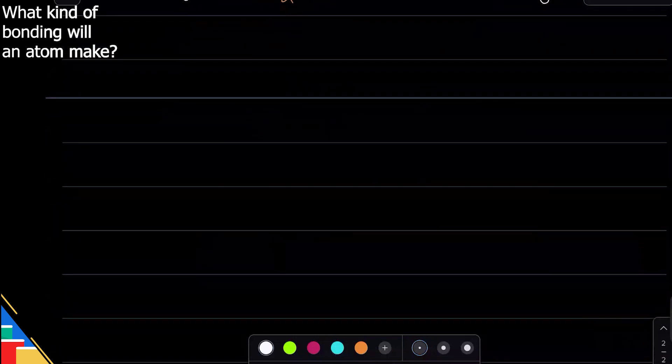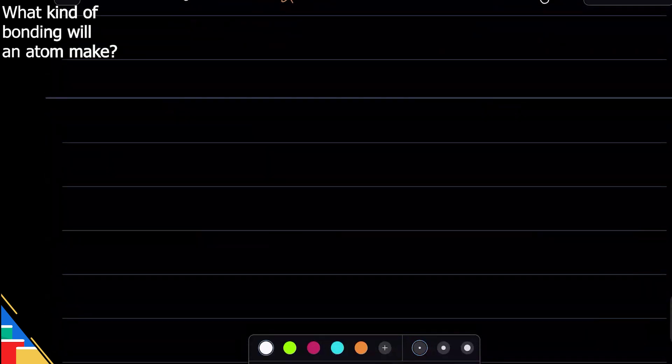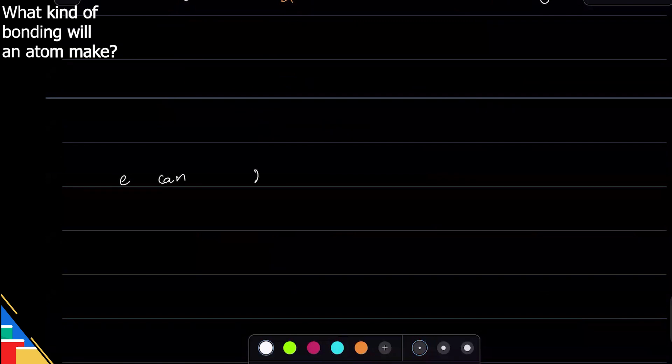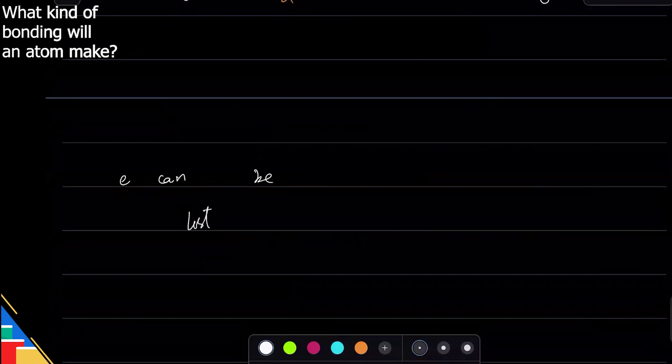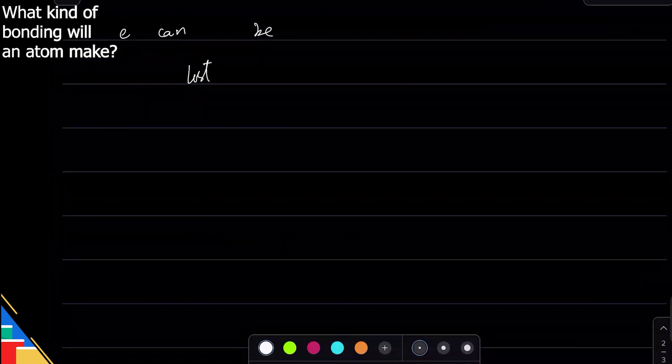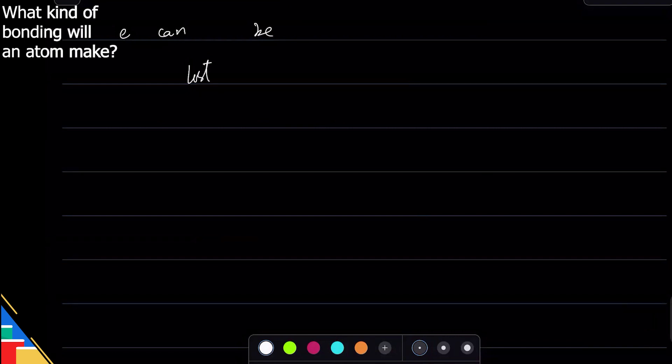That's one option: electrons can be lost to get to zero. If an atom does that, we say it's metallic character and this is what most metals do, and that is why this is called metallic bonding.